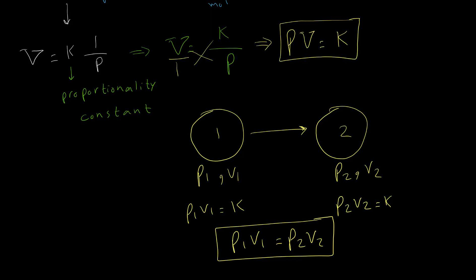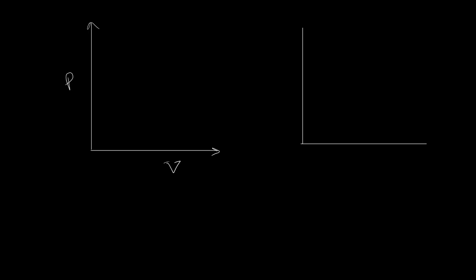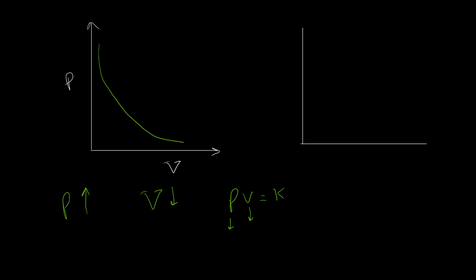If we want a diagram for the relationship between pressure and volume, with pressure on the y-axis and volume on the x-axis: whenever pressure increases, volume must decrease, because their multiplication always equals a constant. For example, if you double the pressure, the volume must be halved. So the graph shows decreasing volume as pressure increases, or vice versa.